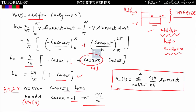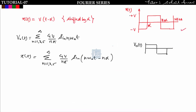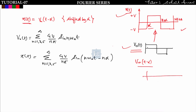Now take another waveform x(t), which is similar to v_naught(t) except that it is shifted by some angle alpha to the right. If we shift v_naught(t) by angle alpha towards the right, we get x(t). Therefore x(t) = v_naught(t − alpha). If we find v_naught(t − alpha), we will get the same waveform as x(t) shifted by angle alpha.